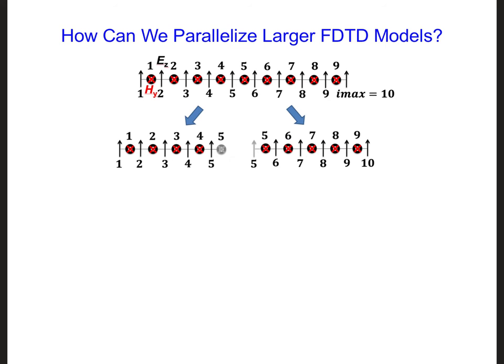For example, say I have a two-dimensional code here. And let's say I want to distribute it onto four processors. So I'll distribute it onto two in each direction. In this case, instead of sending just one number to a neighboring processor, as we did in one dimension here, one number back and forth,